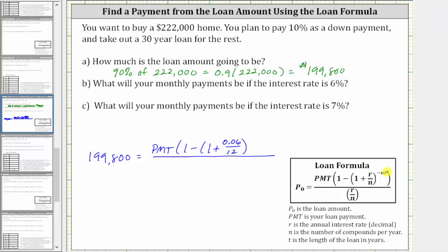This is raised to the power of negative N times T, which is negative 12 times T, where T is the length of the loan in years. It's a 30-year loan, and therefore T is 30. Close parenthesis. All this is divided by R divided by N, which gives us 0.06 divided by 12.